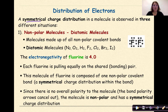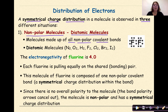A symmetrical charge distribution in a molecule is observed in three different situations. The first is nonpolar molecules — specifically looking at diatomic molecules. These are molecules made up of all nonpolar covalent bonds, meaning these elements are bound to themselves. The diatomic molecules are nitrogen, oxygen, hydrogen, fluorine, chlorine, bromine, and iodine.